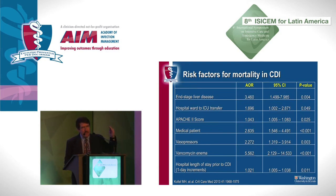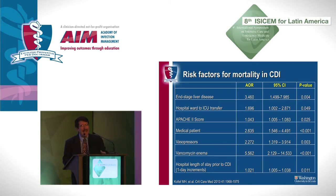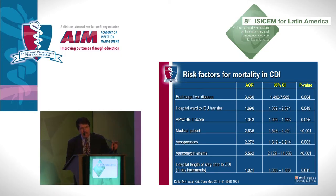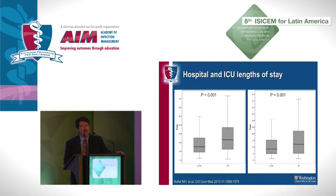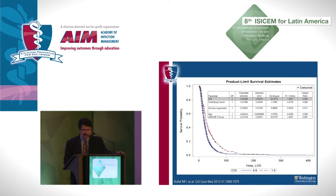When looking at C. diff infected patients alone to identify risk factors for mortality, end-stage liver disease was an independent predictor. Patients transferred from the hospital floor to the ICU had a higher risk of mortality, implying possible delay in diagnosis and treatment. Higher Apache scores were associated with higher mortality, as was shock. The need for vancomycin enemas had the highest odds ratio — likely because these are the sickest patients with ileus, making vancomycin enemas a marker of more severe disease. C. diff infection was confirmed as an independent predictor for prolongation of hospital stay in a Cox model.